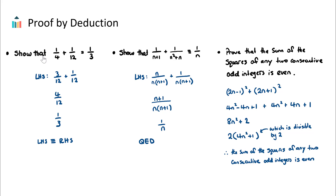For this first one, we want to show or prove that 1 over 4 plus 1 over 12 is equal to 1 over 3. We tackle the left-hand side and try to transform it using basic algebra to equal the right-hand side. Well, 1 over 4 is the same as 3 over 12 if we multiply top and bottom by 3. So 3 over 12 plus 1 over 12 gives us a common denominator of 12, so we add the numerators to get 4 over 12.